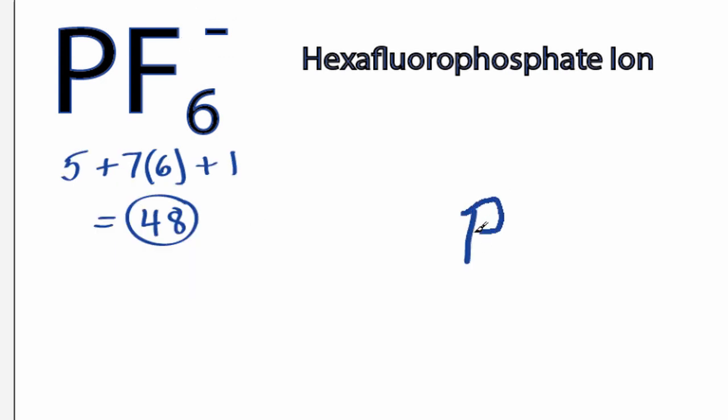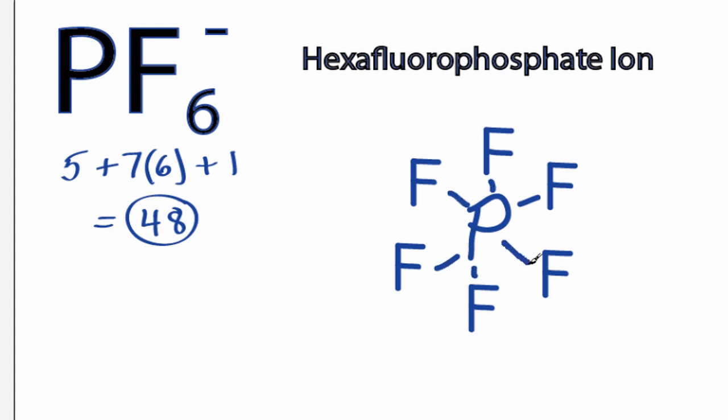Phosphorus is the least electronegative, we'll put that at the center, and then we'll put the 6 fluorines around the outside. We'll form chemical bonds between the fluorine and the phosphorus. Each of these is 2 valence electrons, so we have 6 bonds.